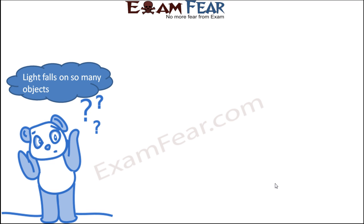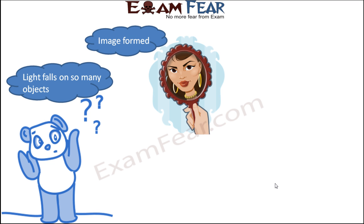Light falls on so many objects. There are a huge number of objects existing on this earth and light falls on all of them. Like when the sun rises, the sunlight falls on each and everything that is there on the earth. But we see a lot of interesting stuff — in certain objects, when light falls, an image is formed.